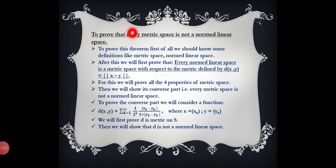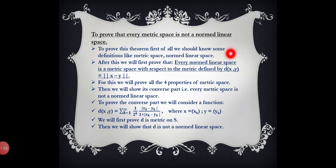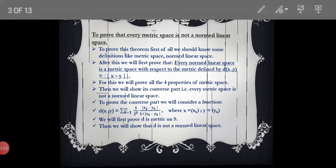By following all these steps we can conclude that every metric space is not a normed linear space. So let's first define some definitions.